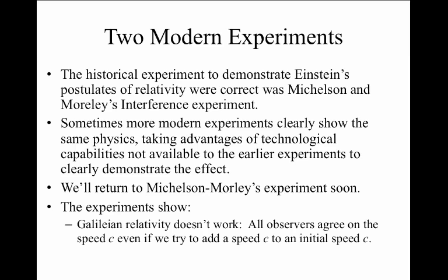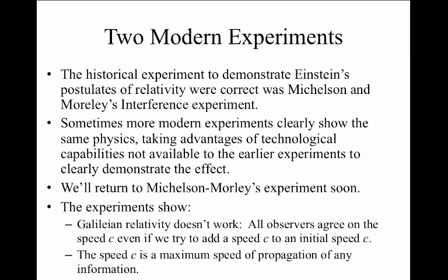Galilean relativity doesn't work and Einstein suggested that all observers will observe a speed c for the speed of light. The second experiment we're going to look at demonstrates that the speed of c is a maximum for speed of propagation for any information in the world. In fact, nothing can go faster than the speed of c.